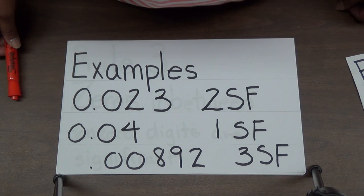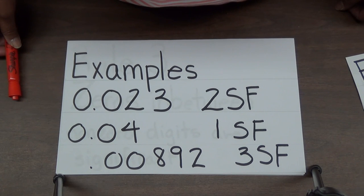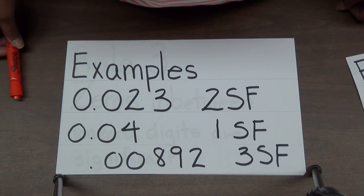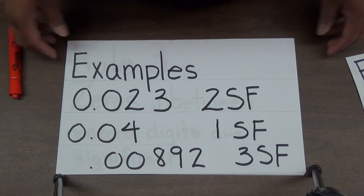0.04 has only one significant figure. 0.00892 has three significant figures. Again, rule number two: zeros at the beginning of a number — all zeros that come before the first nonzero digit — are not significant.